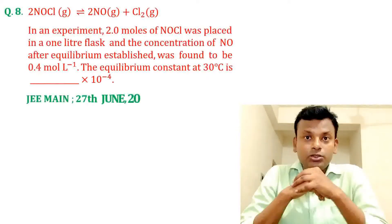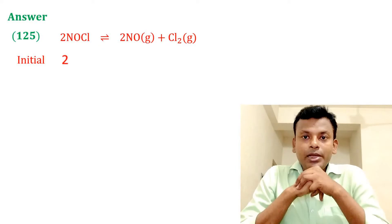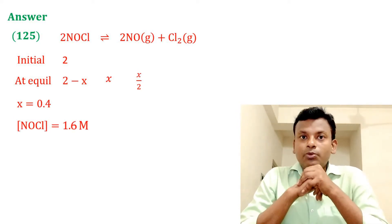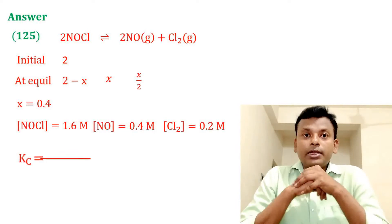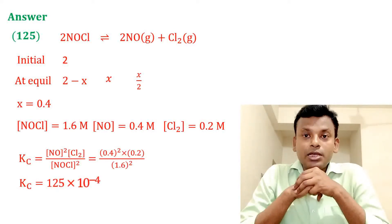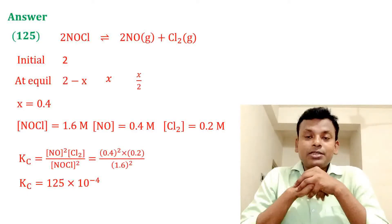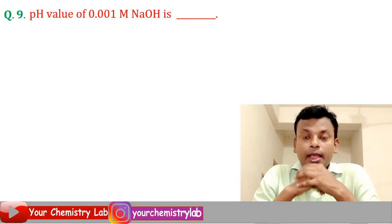Answer is 125. 2NOCl gives 2NO plus Cl2. Initially 2; at equilibrium: (2 − x), x, x/2. With x = 0.4: [NOCl] = 1.6 M, [NO] = 0.4 M, [Cl2] = 0.2 M. Kc equals [NO]² times [Cl2] divided by [NOCl]², giving Kc = 125 × 10 to the power minus 4. Answer is 125.